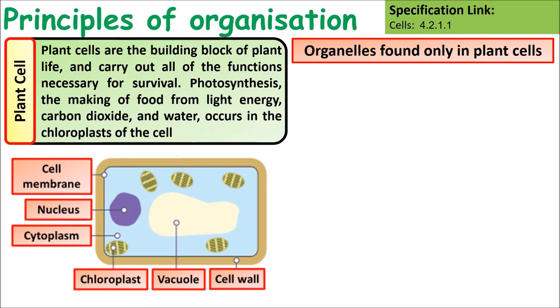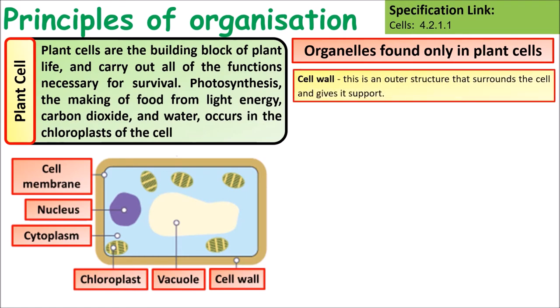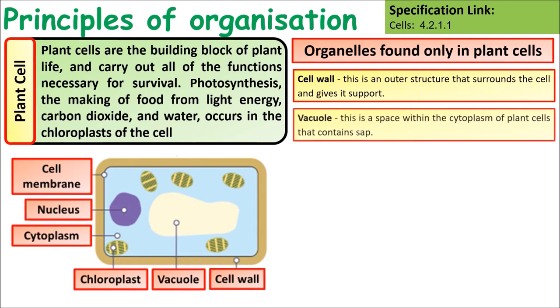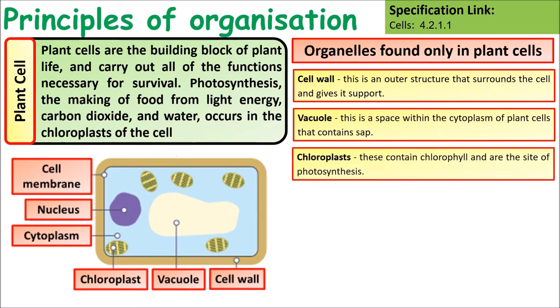There are also organelles only found in plant cells. Plants have cell walls which strengthen their structure, a vacuole which contains sap and helps the cell remain turgid, and chloroplasts which contain chlorophyll and are the site of photosynthesis.